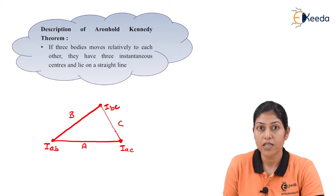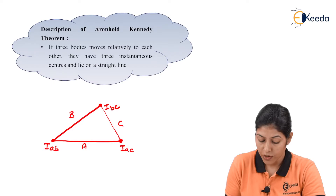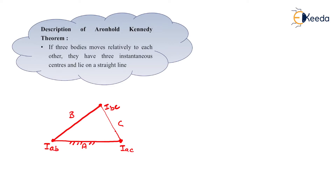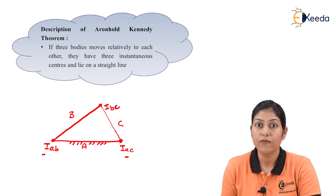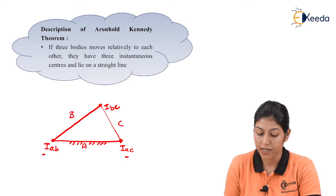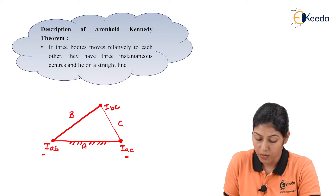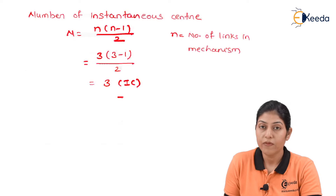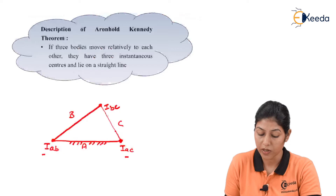Now, if we fix one link — for example, link A — then IAB and IAC are considered fixed instantaneous centers. As per the Arnold-Kennedy theorem, if three bodies A, B, and C are moving relatively to each other, they have three instantaneous centers, and the total number of instantaneous centers is three. The key statement is that all instantaneous centers lie on a straight line.